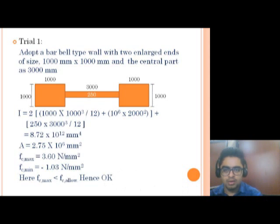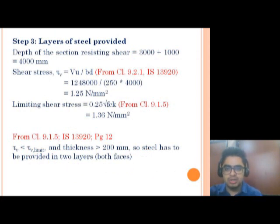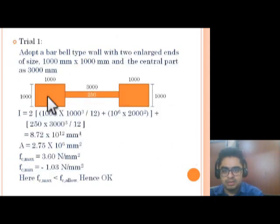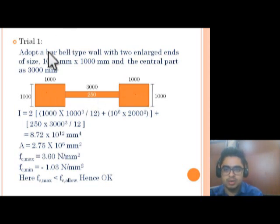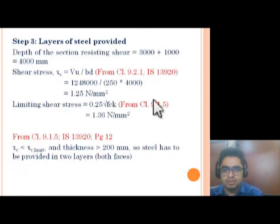Step 3: Layers of steel to be provided. The depth of the section resisting shear is the center-to-center distance between the two barbell-type walls, which we get as 4000 mm. Shear stress τv = Vu/(B·D), from IS 13920 clause 9.2.1. The maximum shear value Vu = 1248 kN.